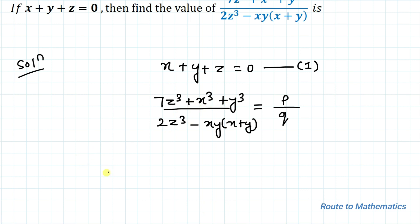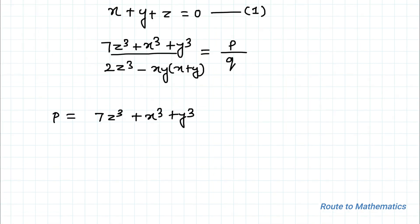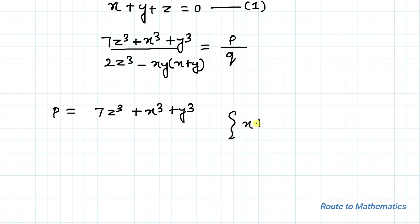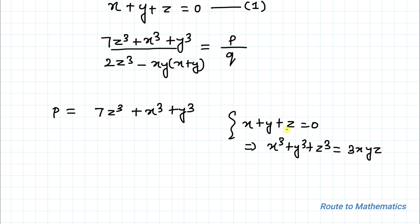In the next step, let's simplify the numerator part: P = 7z³ + x³ + y³. From equation one, x + y + z = 0. We know that when x + y + z = 0, we can write x³ + y³ + z³ = 3xyz. By taking the z term to the right-hand side and cubing both sides, we get this identity.